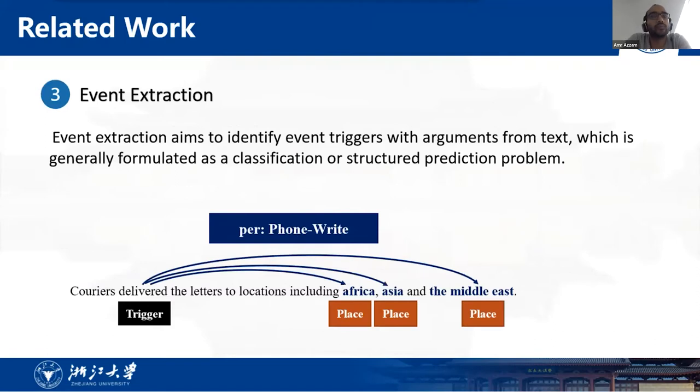Event extraction aims to identify event triggers with arguments from text, which is generally formulated as a classification or structured prediction problem to address the few-shot issue for event extraction. In addition, some researchers utilize external knowledge from FrameNet and propose a global inference approach to improve event detection performance. More recently, some researchers reformulate the event extraction task as machine reading comprehension, which can achieve better performance in few-shot setting than vanilla fine-tuning.